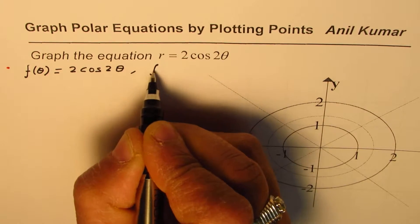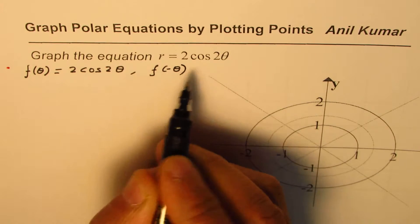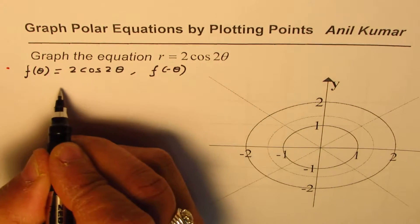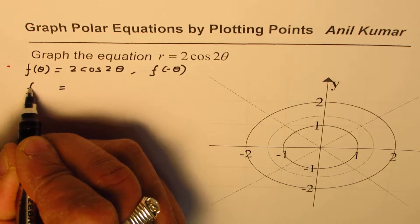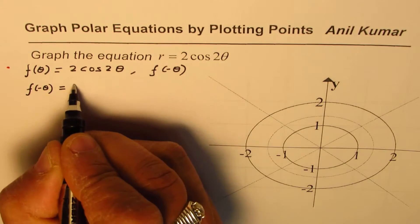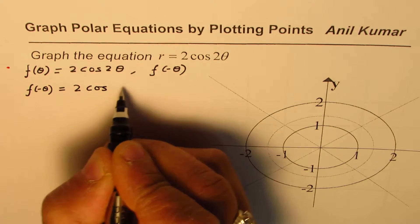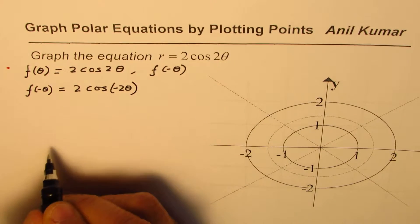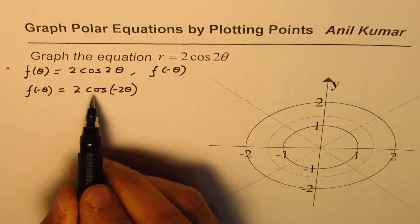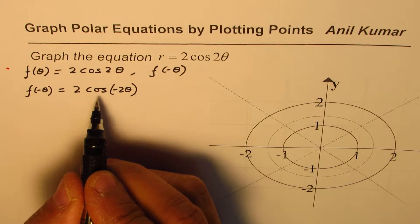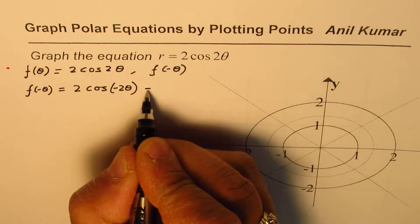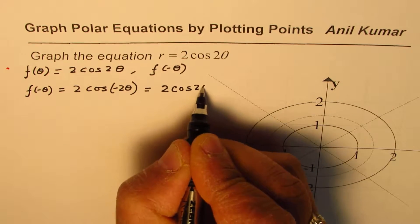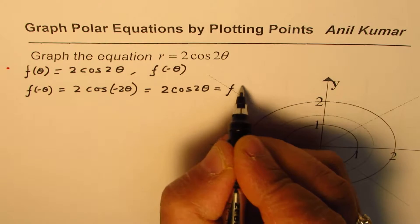Let us find what f(−θ) is. If I replace θ with −θ, I get f(−θ) = 2 cos(−2θ). Now, cosine is an even function, so cos(−2θ) = cos(2θ). Therefore f(−θ) = 2 cos 2θ, which is the same as f(θ).